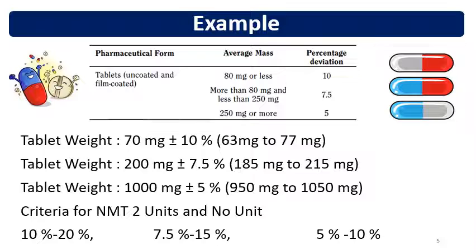If a tablet is film coated, for example with a core weight of around 80 mg, the limit at the core tablet stage is 10% weight variation. After film coating, if the weight becomes 82, 83, or 85 mg, the percentage deviation limit changes to 7.5%. So as per the final tablet weight after any coating — film, enteric, or other — the weight variation limits are applied accordingly.